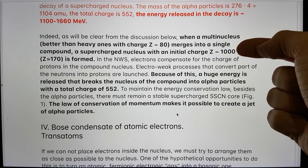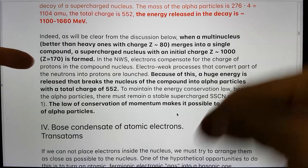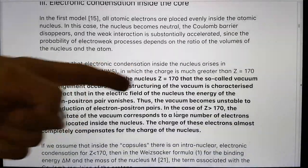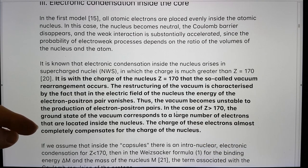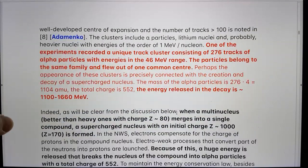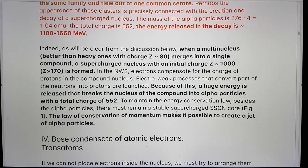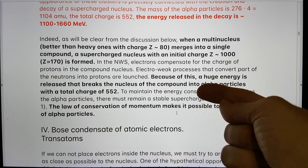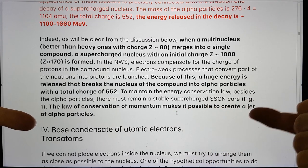It's interesting because Mercury was used by Shoulders in his experiments producing his charge clusters, his EVOs. It merges into a single compound, a supercharged nucleus with an initial charge of Z approximately 1000. Because of this, a huge energy is released that breaks the nucleus of the compound into alpha particles with a total charge of 552. The law of conservation of momentum makes it possible to create a jet of alpha particles.